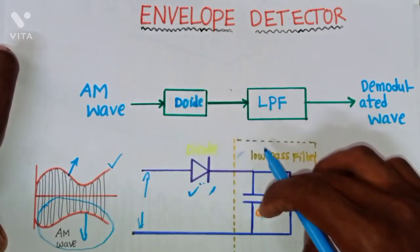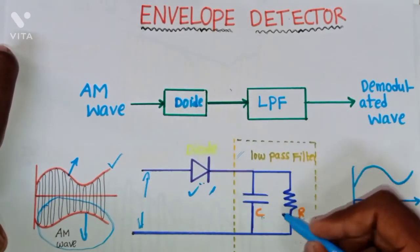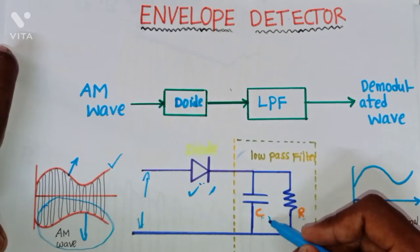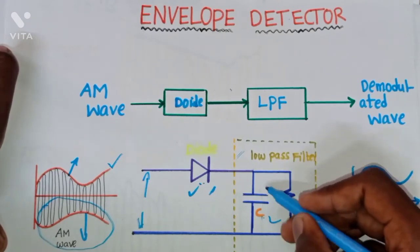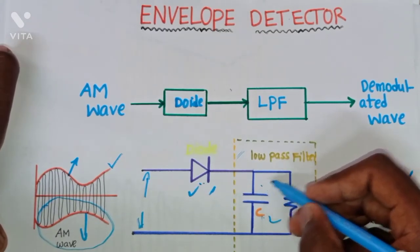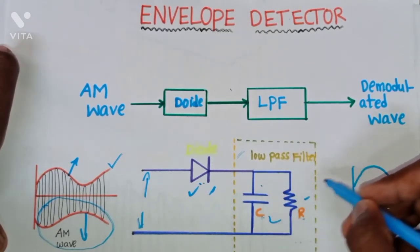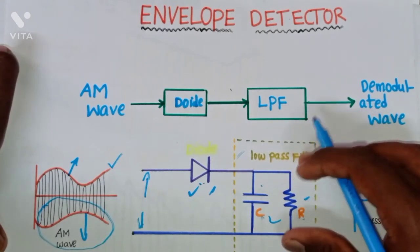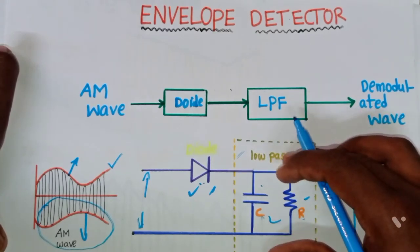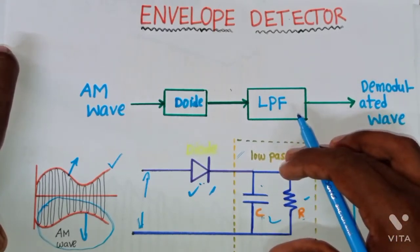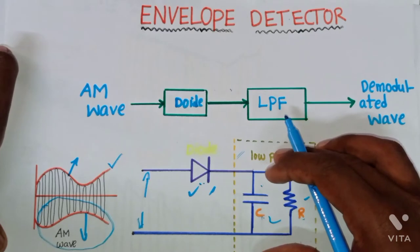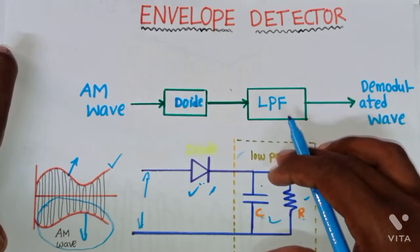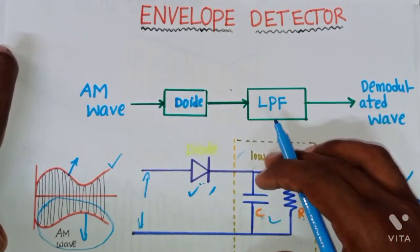Whenever the positive half cycle or positive sideband is allowed by the diode, it is passed to the low-pass filter section. This combination of capacitor and resistor acts as a low-pass filter. This low-pass filter section eliminates the high-frequency components, because our message signal contains only low-frequency components.